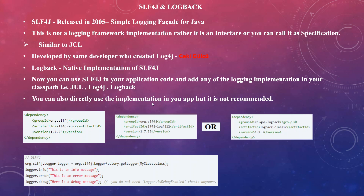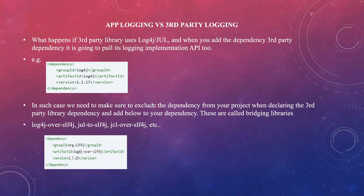You might wonder what happens if there are multiple logging APIs in the classpath. For example, suppose your project uses SLF4J with Logback as the implementation, but a third-party library you're using uses Log4j. When you add that third-party library, it also pulls Log4j into your classpath. In that case, when you start the application it will fail with an exception indicating a conflict between logging APIs in the classpath.